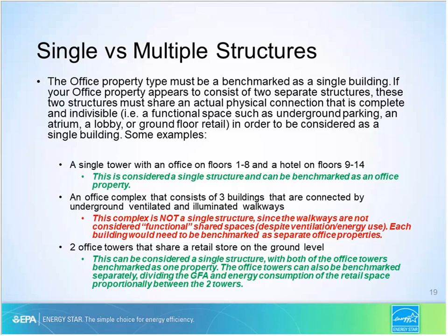The last example is two office towers built on top of a street-level retail store, where you can walk from one tower to the other through the store. The best practice is probably to benchmark each tower separately and divide the retail space's gross floor area and energy consumption proportionately between the two properties. However, you can also use your discretion and benchmark both towers as one property, because the retail store technically constitutes a seamless connection or shared functional space between the two buildings. So there are cases where there is some gray area.